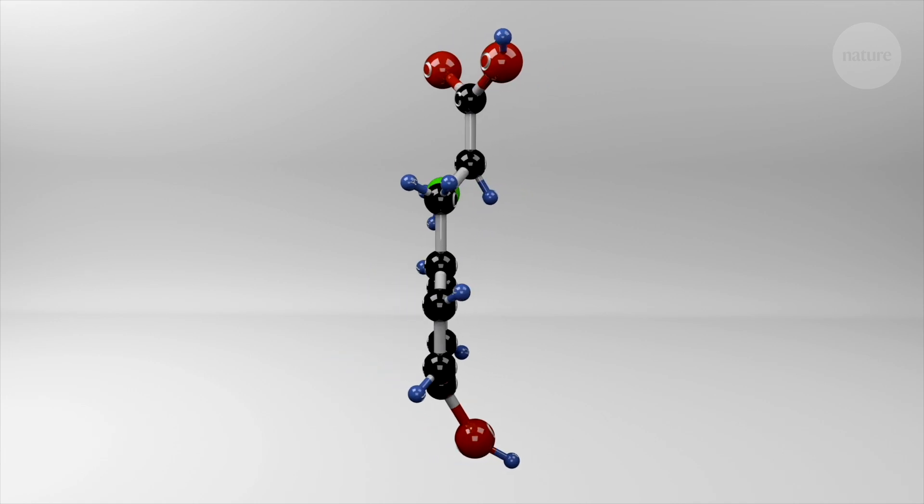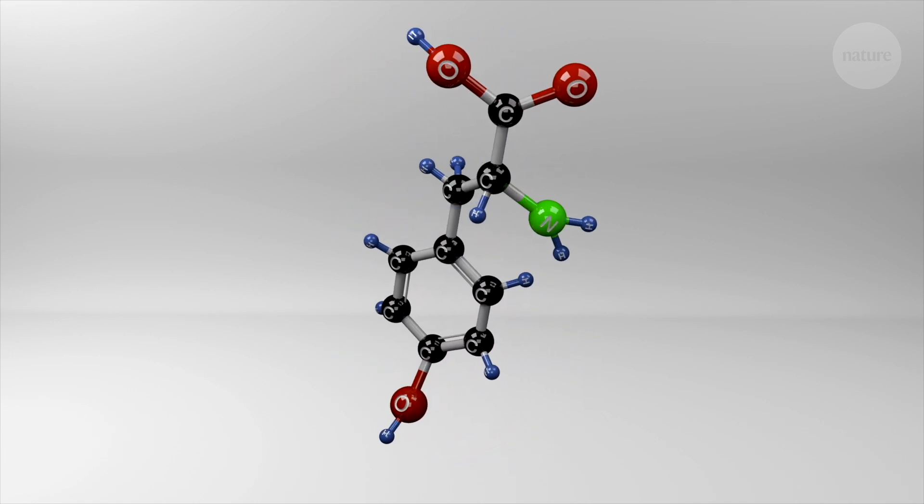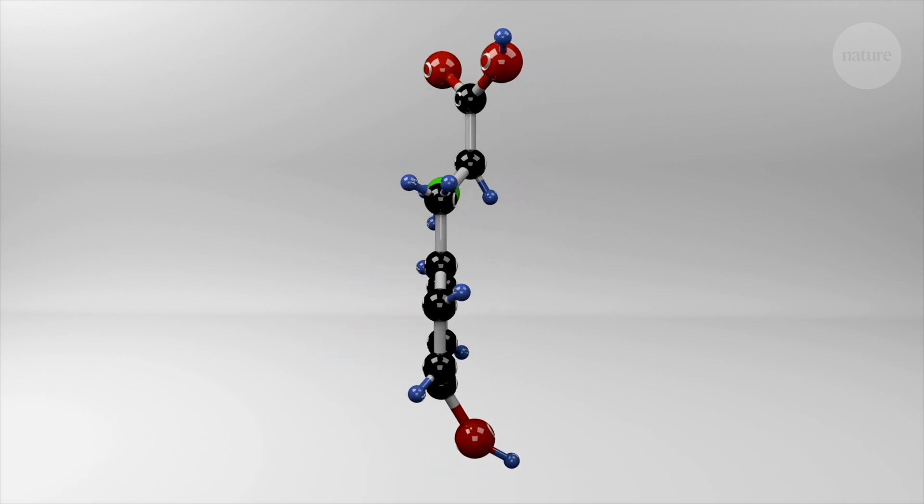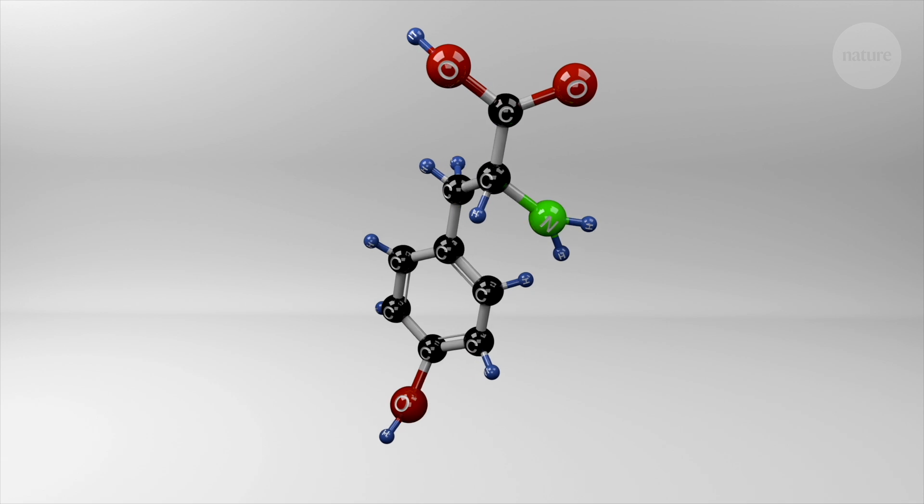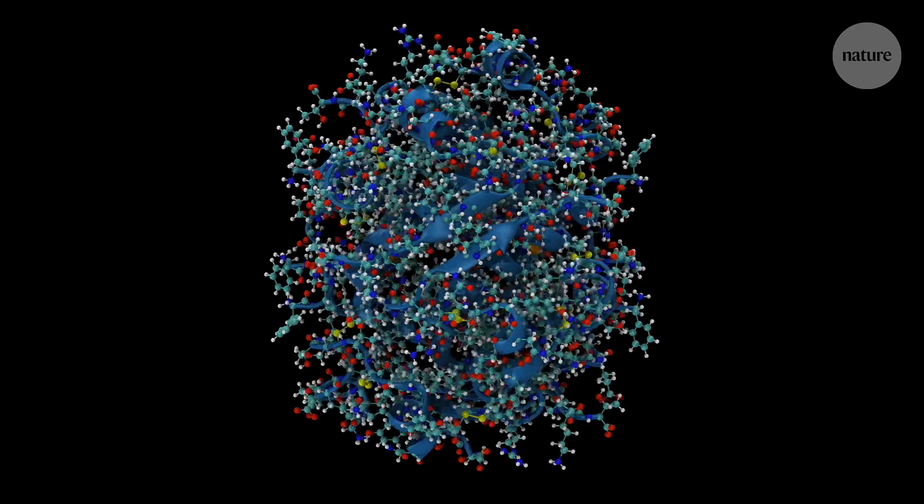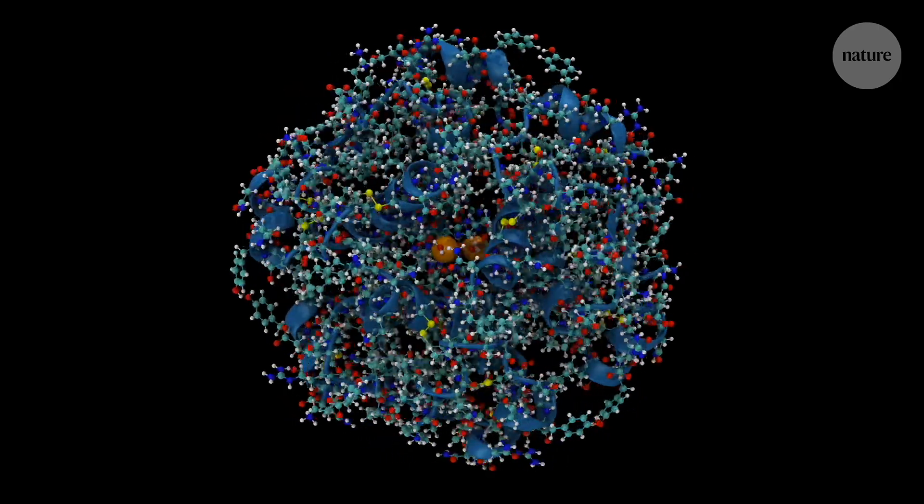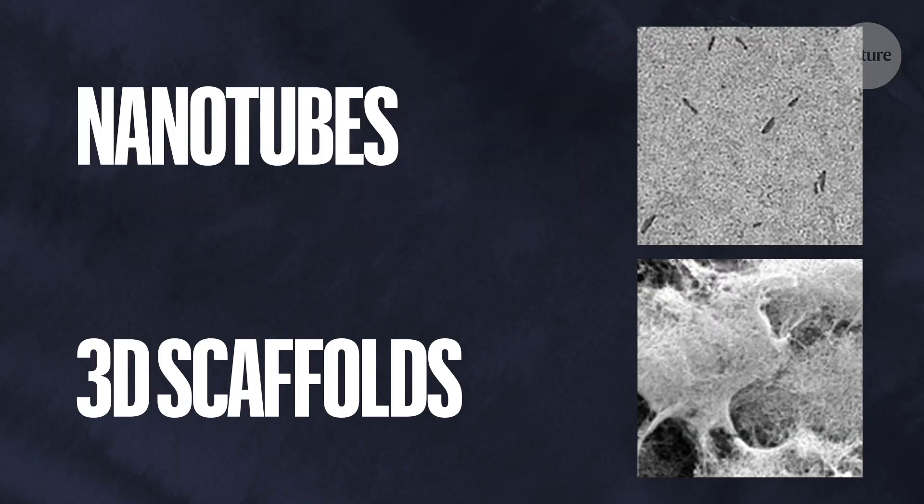Peptides are chains of amino acids, like smaller versions of proteins. And they make for attractive chemical building blocks due to their ability to self-assemble into structures with unique properties. In nature, this could mean hormones like insulin. But researchers have also used peptides to make new materials, like nanotubes and 3D scaffolds.